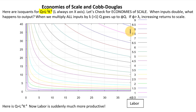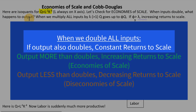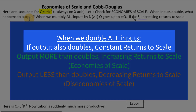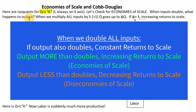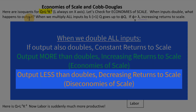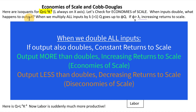The economies of scale definition: when we multiply our inputs by some number greater than 1 — say we double all inputs — we want to know what happens to output. If output also doubles, we have constant returns to scale. If output more than doubles, that's increasing returns to scale, also called economies of scale. If output less than doubles, we have diseconomies of scale, or decreasing returns to scale.